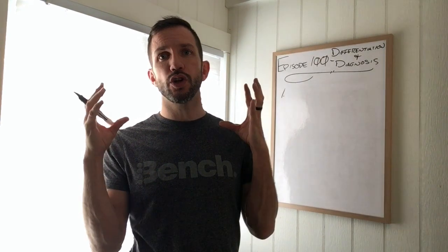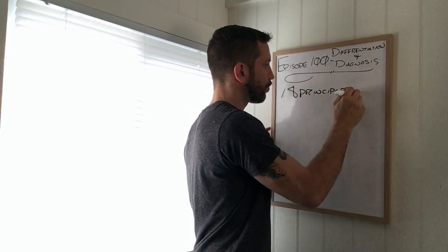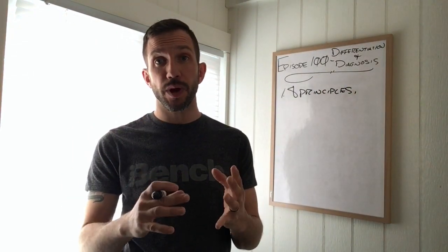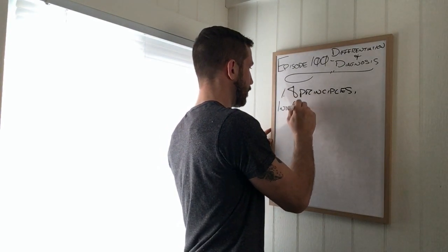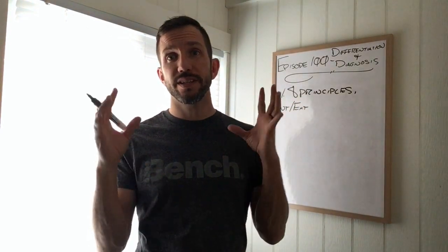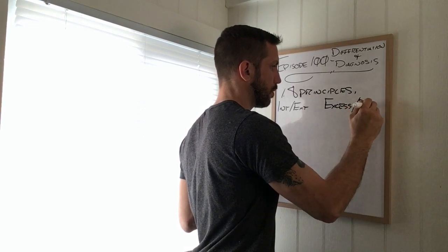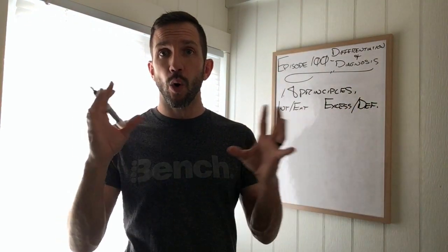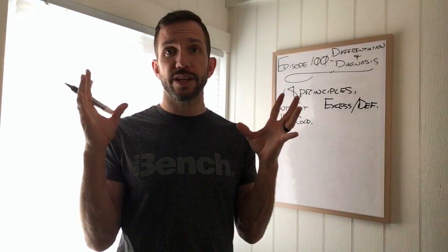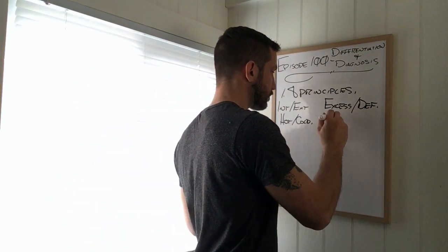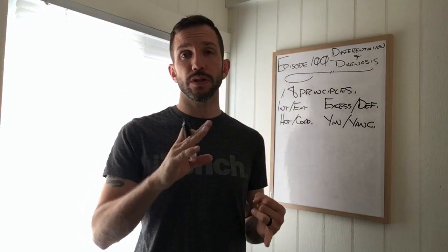The first thing we need to do is look at our eight principles. What I mean by eight principles is: first, we have to find out if this condition is interior or exterior related. The next thing we have to find out is whether it's excess or deficiency. Is it a hot or cold condition? And is it yin or yang? So step one is eight principle diagnosis and differentiation.